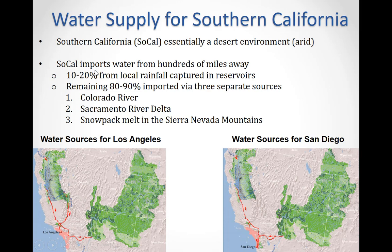Only 10 to 20 percent of the water used in Southern California comes from local sources, mostly from rain replenishing reservoirs and aquifers. The remaining 80 to 90 percent is imported from the sources shown on the map — including those serving Los Angeles and San Diego.